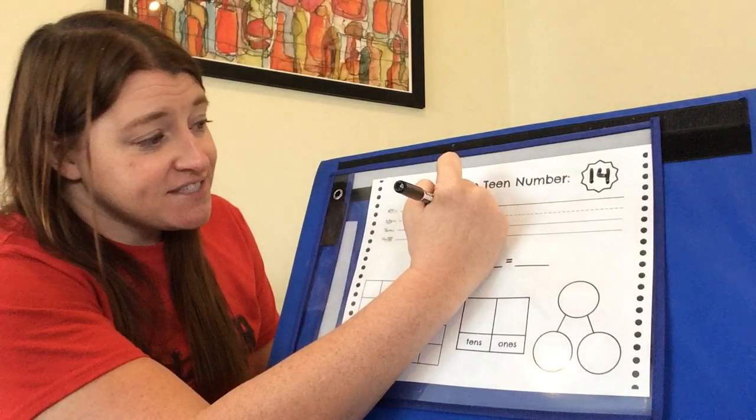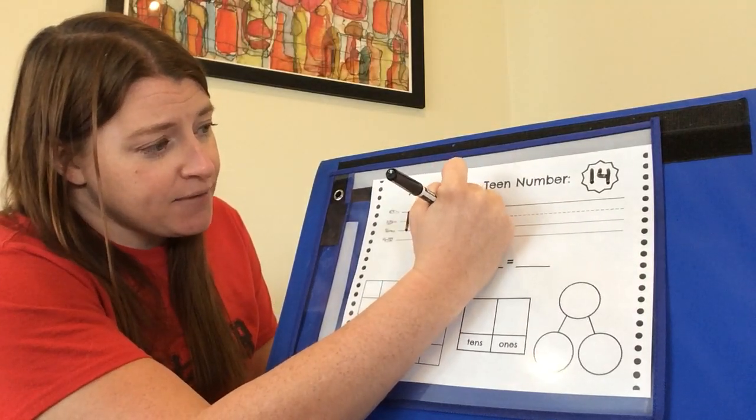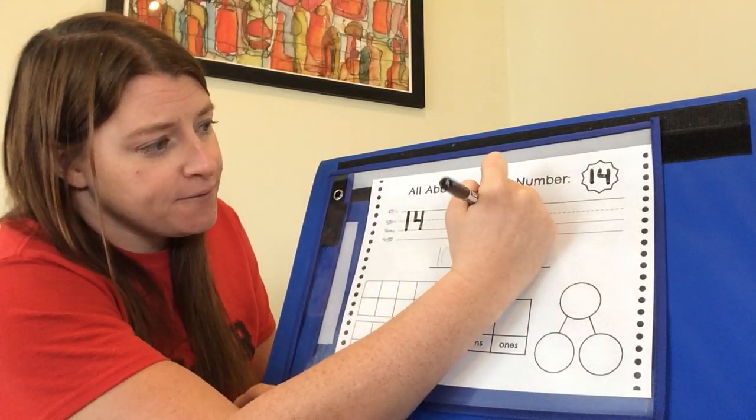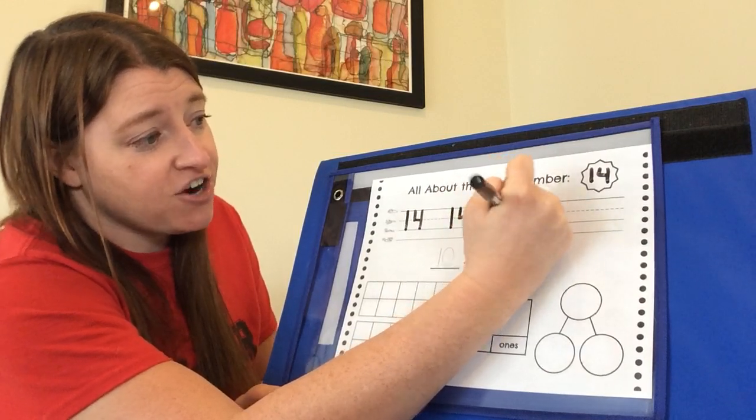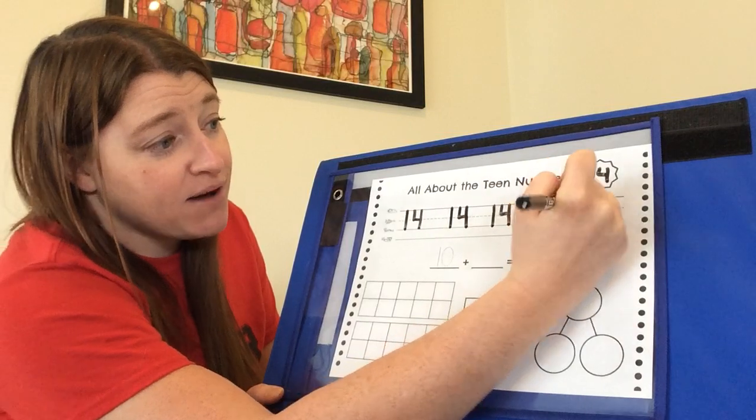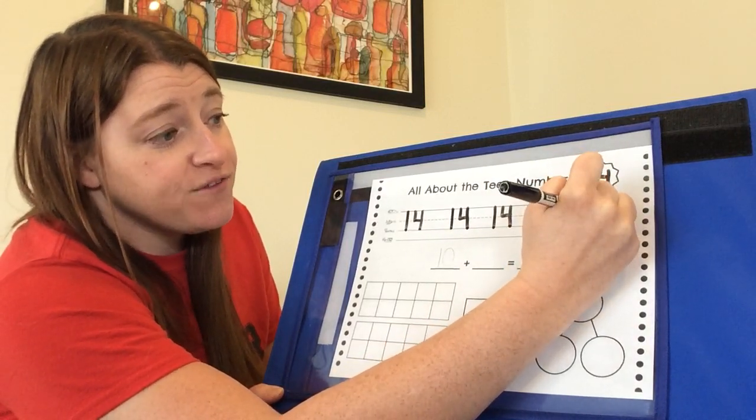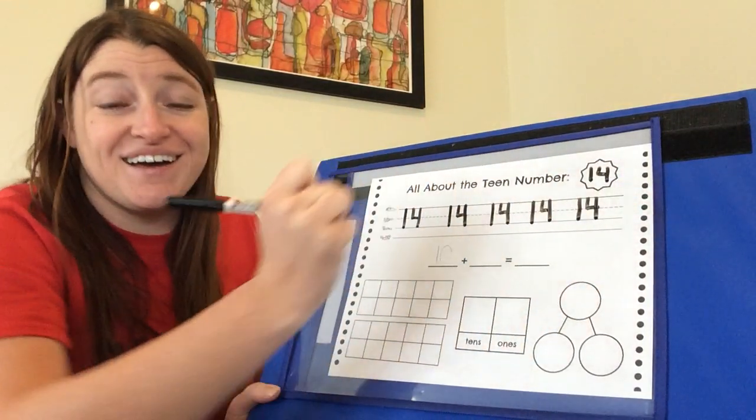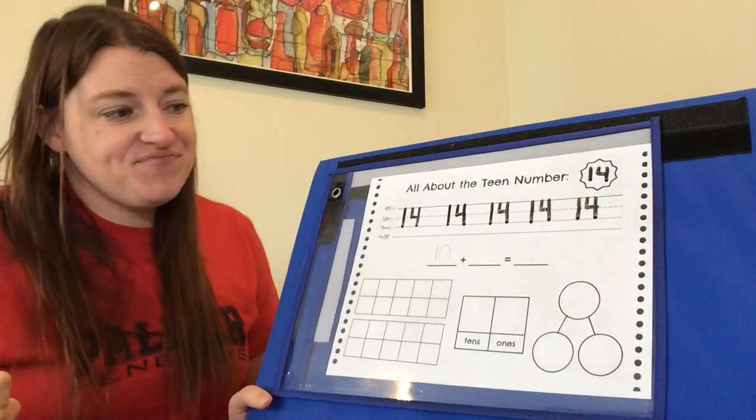Go ahead and make the number 14 a few times. I probably have room for maybe four more. Each time making sure your digits are nice and neat as you're working. If you want to pause to erase or fix one, that would be a great idea if that's something you want to do.